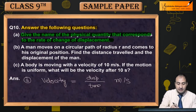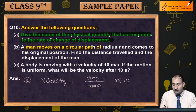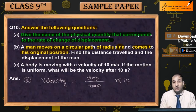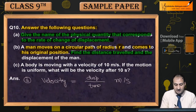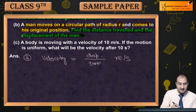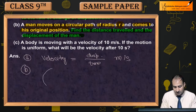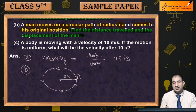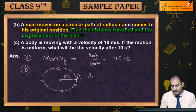Now second question की बात करें — A man moves on a circular path of radius r. r radius के circular path में एक man move हो रहा है, comes to his original position — जहां से वो चला था, वहीं पर आके stop हो गया। Find the distance traveled and the displacement of the man. तो there is a circular path, जिसका radius r है। यहां पर position A से उसने start किया, और move करने के बाद दुबारा A पर आ गया। तो distance की बात करें तो distance क्या है — वो nothing but क्या होगा — circumference of this circle.